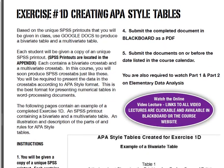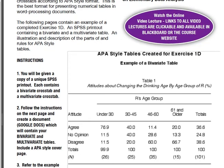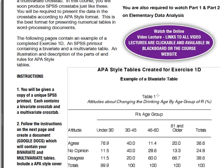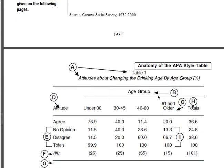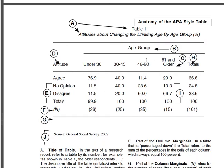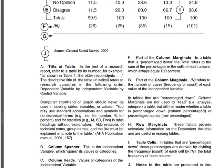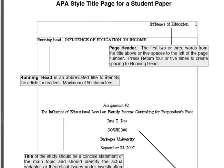Let me switch over to the book. Exercise 1d consists of creating APA style tables. Pick one of the SPSS data files to use, and make sure you watch the online videos — Parts 1 and 2 of SPSS data analysis — so you understand what I'm referring to. In your book you'll find a diagram that helps you understand exactly which part of the data charts you're working with. Segment A is the title, segment B is the column spanner, and so on. This is what your final paper should look like: an APA style title page.